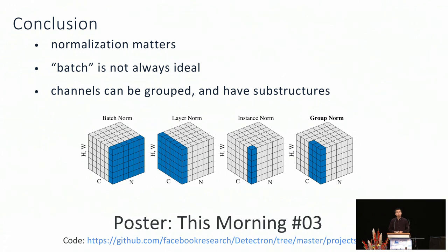In your paper we see convolution plus group norm. For example, in ResNeXt, many people use group convolution — do you have any insight on whether, if using group convolution with group normalization, one should match the group numbers? We have tried group norm on ResNeXt, and we tried different combinations — matching the group size or not matching the group size — and we see similar results.